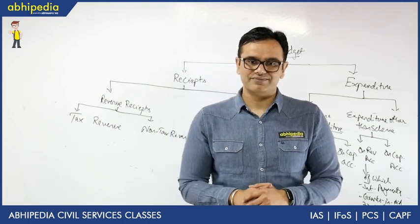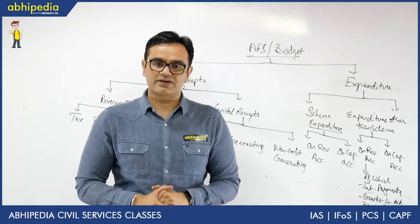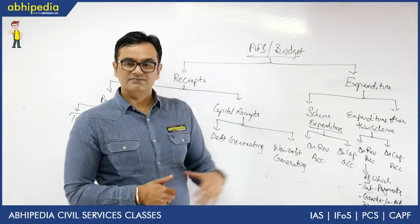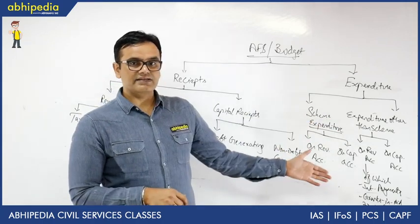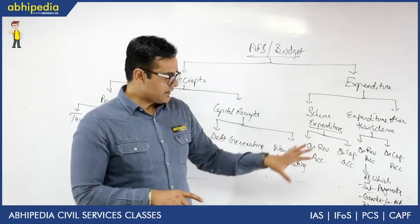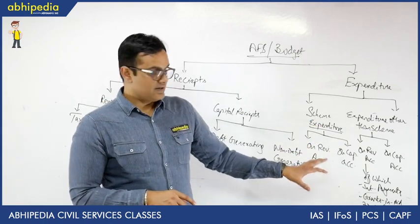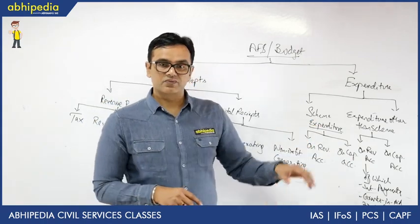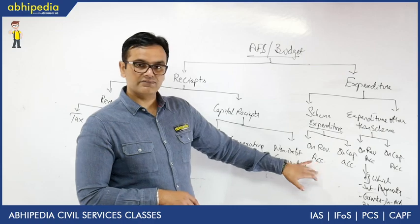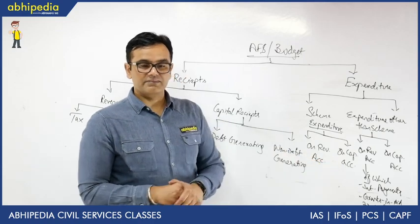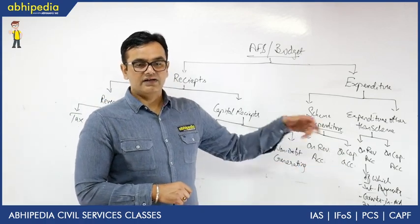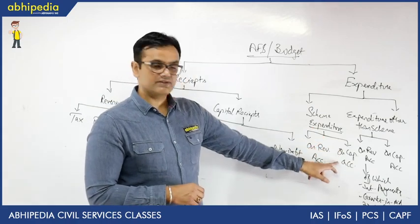On loans given to states or even foreign capital — on the expenditure side, there is scheme expenditure and expenditure other than scheme. Anything to be spent on central sector schemes or centrally sponsored schemes comes under scheme expenditure. Within that, there is revenue count and capital count: what is spent on operational activity, maintenance, and payment of salaries falls under revenue count, while capital count covers asset creation. For example, in MGNREGA, the wages of people come under revenue count, and any assets, tools, or equipment purchased come under capital count.